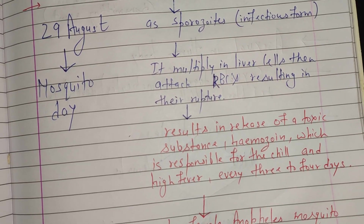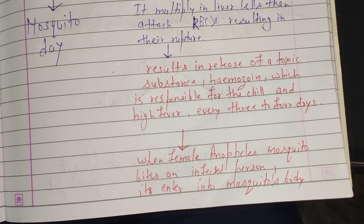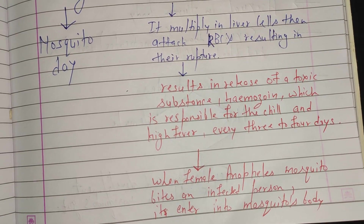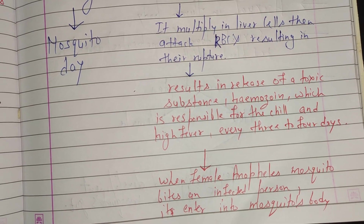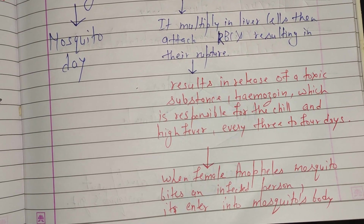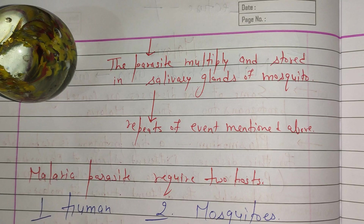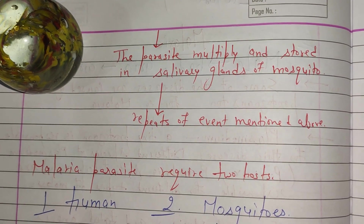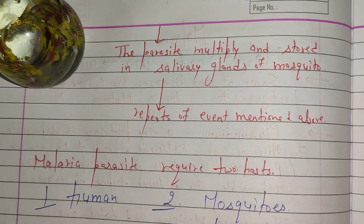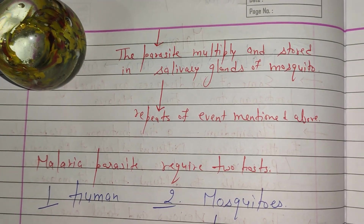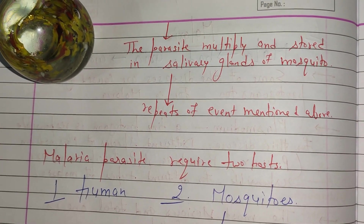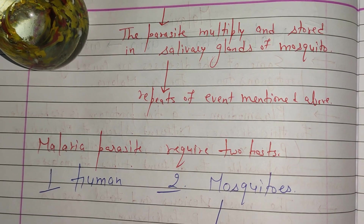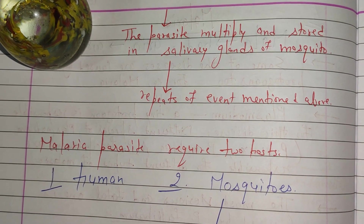Fever occurs every three to four days due to this cycle. When a normal female Anopheles mosquito bites an infected human, after the RBCs rupture, the parasites enter the mosquito's body. In the mosquito's body, Plasmodium replicates and increases in number, then moves to the salivary glands. When the mosquito bites a normal, uninfected human being, the cycle repeats again.